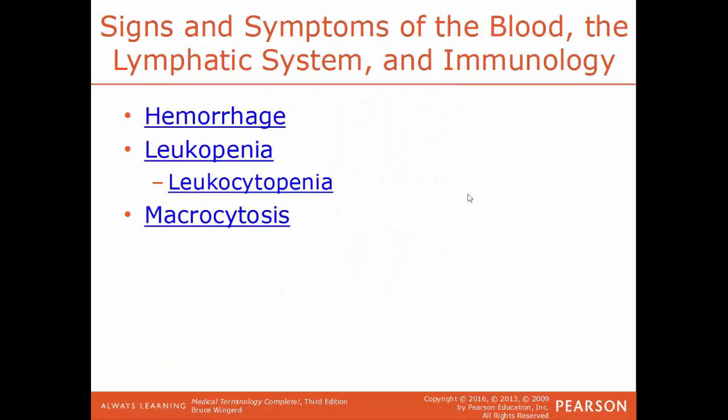Hemorrhage is the escape of blood through a ruptured blood vessel. Hemo refers to blood, and the suffix -rrhage means a bursting forth of blood. Leukopenia is a deficiency or reduction in the number of white blood cells. In a healthy person, there's an approximate normal count — when this number drops significantly, it indicates injury or infection somewhere. A synonym for this condition is leukocytopenia.